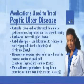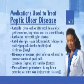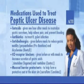Medications used to treat peptic ulcer disease include antacids, given one hour after meals to neutralize gastric secretions, help relieve pain, and prevent bleeding. Other medications are antibiotics to treat the H. pylori infection, and anticholinergic drugs like propantheline (Probanthine) or dicyclomine (Bentyl), given before meals to reduce gastric motility.